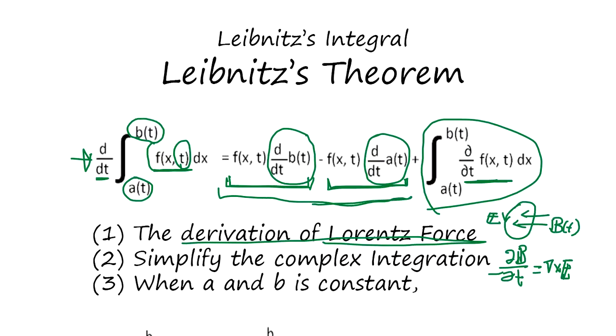Suppose B is fixed. But this boundary, the ring of the conductor, moves around. Then what happens? It still generates electrical field. And this part shows that boundary movement.